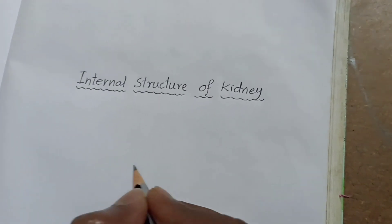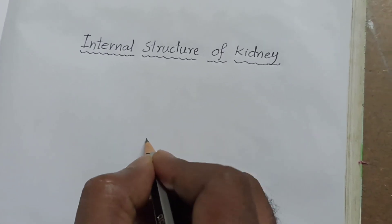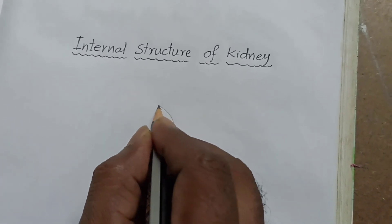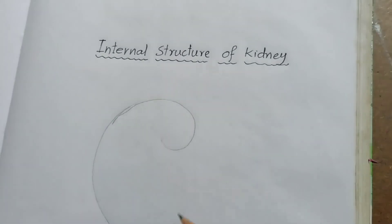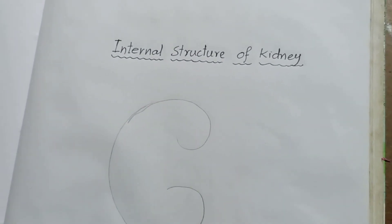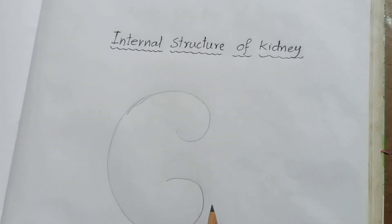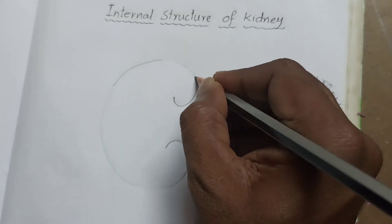Good morning, today our topic is how to draw internal structure of kidney very easily. Let us start. First you draw one C shape like this. You have to draw like this first.